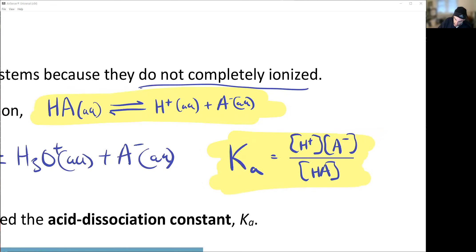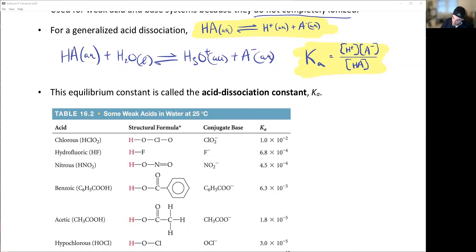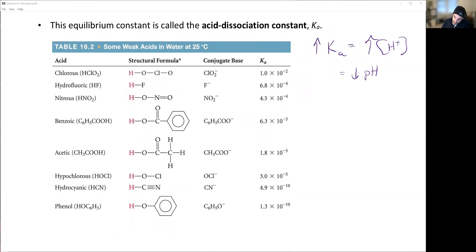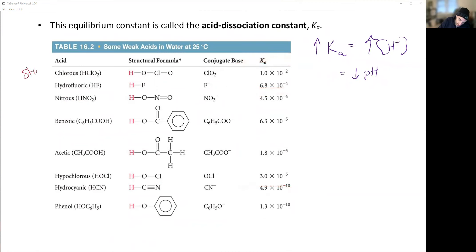We're going to solve these a lot like equilibrium questions, because they are equilibrium. These equilibrium constants — a higher Ka equals an increase in [H⁺], which equals a decrease in pH, or an increase in acidity. The higher the Ka value, the more dissociation we're going to have. Looking at a table of values, the one at the top has the highest Ka and is the strongest acid; the bottom one is the weakest.